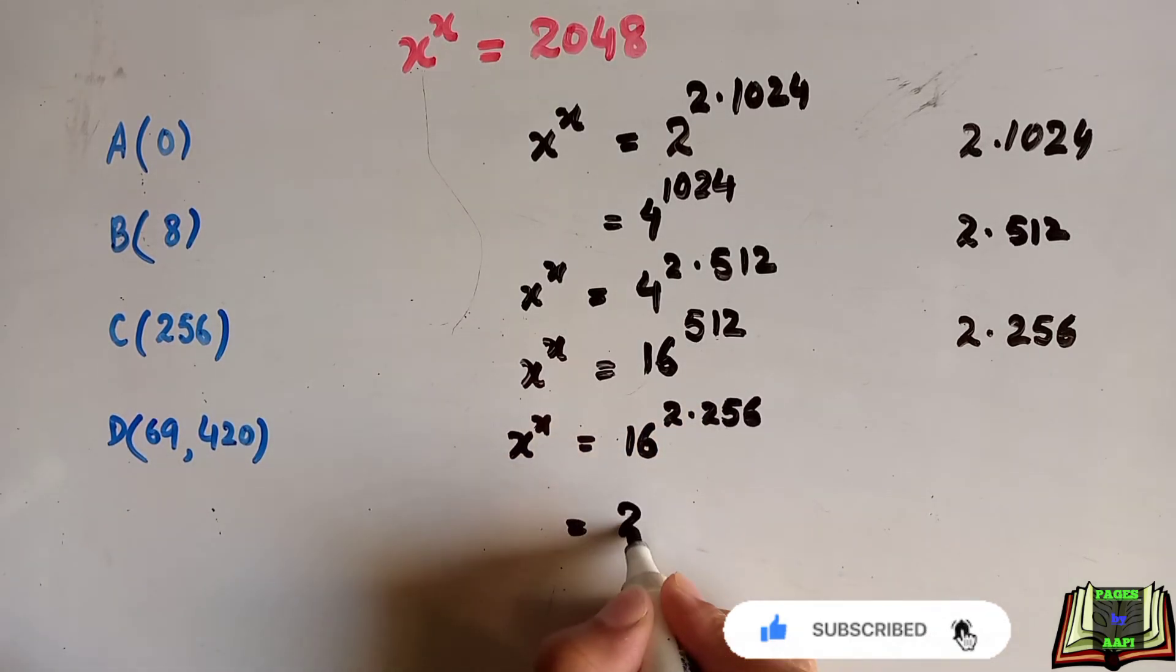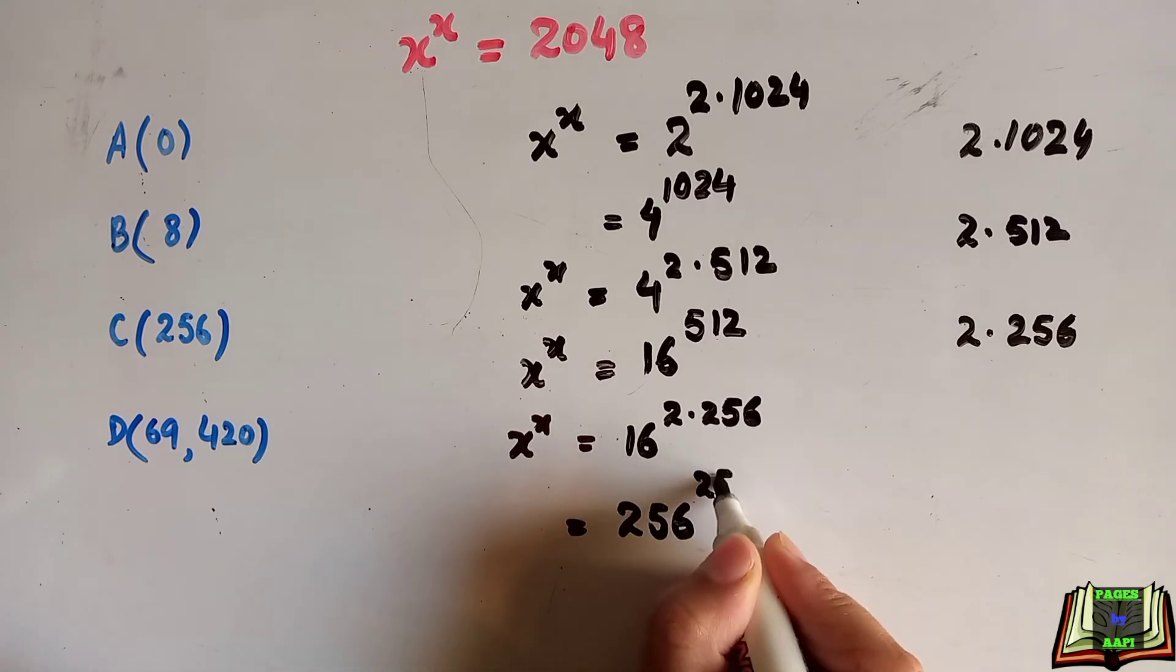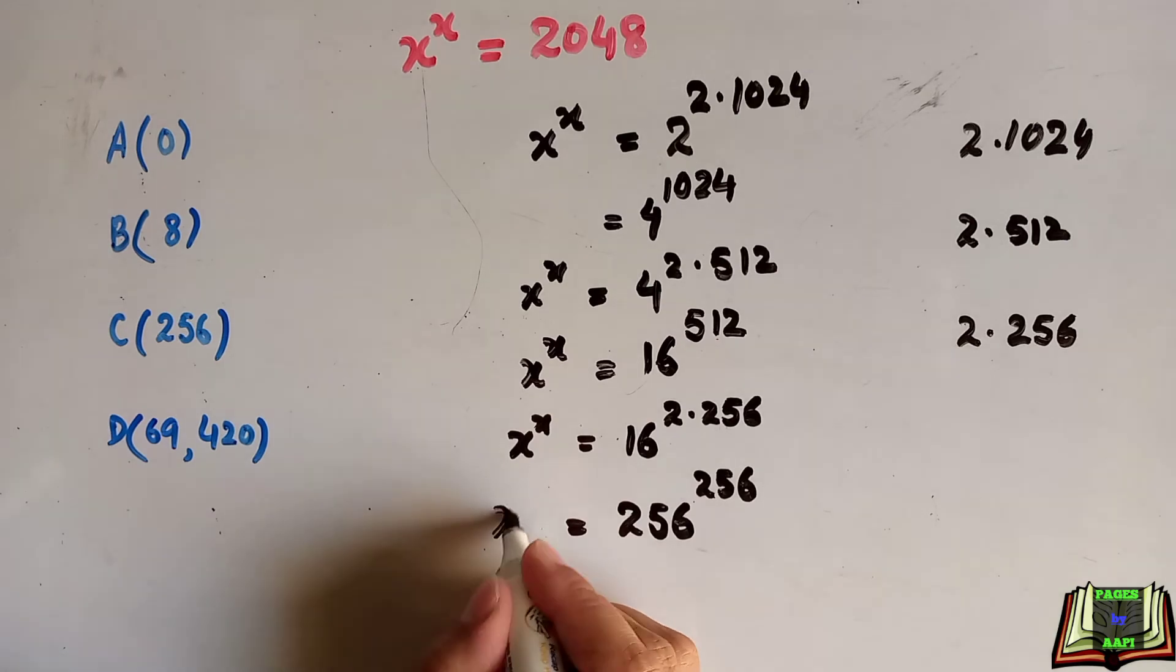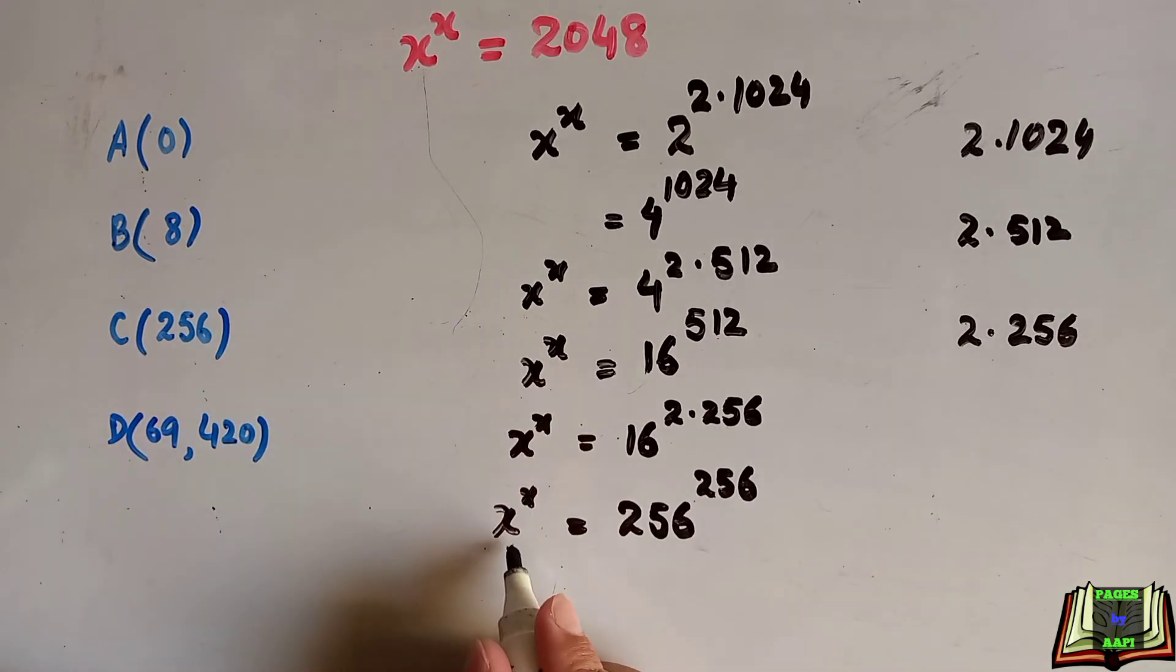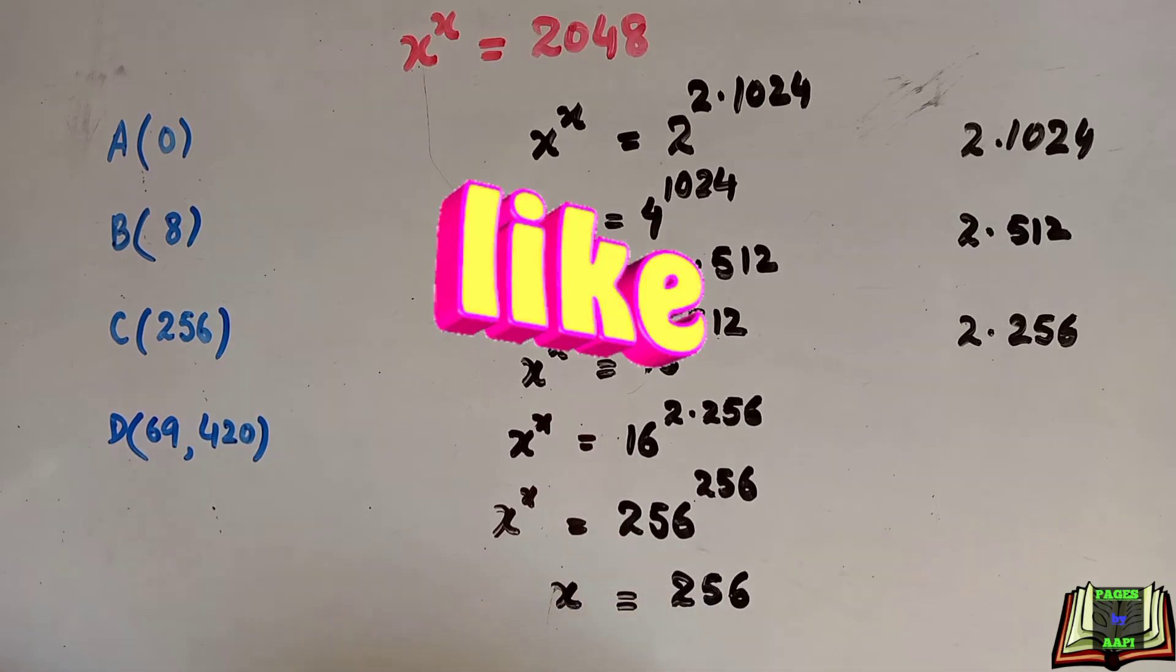16 to the power 2, or 16 squared, can be written as 256 to the power 256. We have got the answer: x is equal to 256. I hope you understand it. If you have any question or query, write